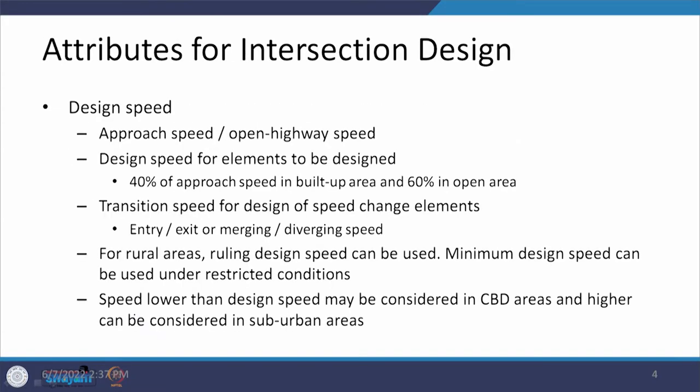We are going to look at factors associated with human beings, traffic, road, environmental conditions, and economic conditions. Based on time, we will also move into another topic which is auxiliary lanes. Now let us start with the attributes for intersection design.